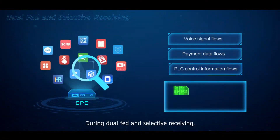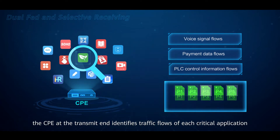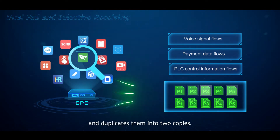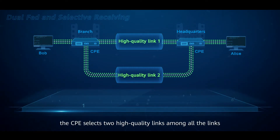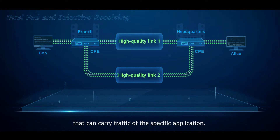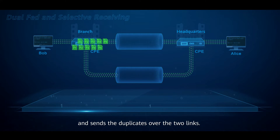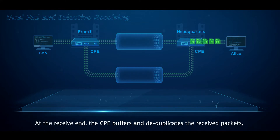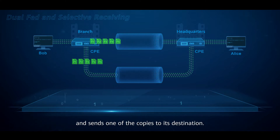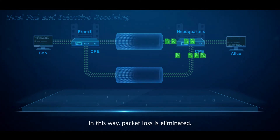During dual-fed and selective receiving, the CPE at the transmit end identifies traffic flows of each critical application and duplicates them into two copies. Thanks to intelligent traffic steering, the CPE selects two high-quality links among all available links and sends the duplicates over the two links. At the receive end, the CPE buffers and deduplicates the received packets and sends one copy to its destination. In this way, packet loss is eliminated.